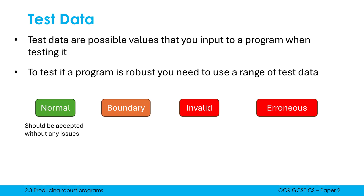Normal test data is somewhat as the name suggests — this is data you are expecting the user to type in, values that shouldn't have any issues when they run, no errors at all. Boundary test data is where it gets a little more interesting. This is test data which is the correct data type but is on the edge of being either accepted or rejected — either just inside or just outside the acceptable range. We test boundary data specifically because your condition might make a mistake here; for example, using a greater-than sign when you needed a greater-than-or-equal-to sign.